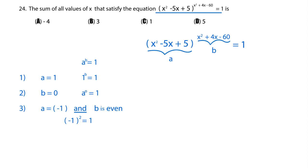So let's start with the first one, which is this one right here. A is equal to 1. So this is A right here. So we have to set that equal to 1. x squared minus 5x plus 5 is equal to 1.